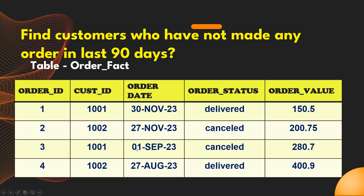For customer 1001's third order on 1st September 2023, since 1001 already ordered within 90 days, we should exclude this customer ID from the output. For customer 1002, the order on 27th August 2023 crosses 90 days. Since 1002 has not placed any delivered order within 90 days, we should include this customer ID in the output.